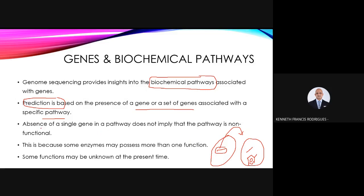The absence of a single gene in a pathway does not imply that the pathway is non-functional. Generally when we sequence genomes and compare them, we look for genes in a pathway. A pathway may comprise more than one gene, and the absence of one gene does not imply non-functionality because there may be complementary genes in the microbial genome. We can also look at the functionality of enzymes — many enzymes in bacteria have been cloned and sequenced in E. coli for industrial purposes. Some functions may be unknown at present, as certain genes have not been previously reported.